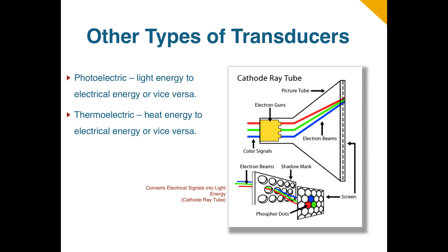Two other types of transducers include photoelectric and thermoelectric. Photoelectric transducers convert light energy to electrical energy, or the other way around. Thermoelectric transducers convert heat energy to electrical energy, or vice versa. Types of photoelectric transducers include the cathode ray tube, shown here, light bulbs, laser diodes, and light-emitting diodes. Thermoelectric transducers include the thermocouple and thermistor. The thermocouple converts heat energy to electrical energy, while the thermistor is a component that experiences changes in resistance with changes in temperature. In other words, as the temperature of the thermistor increases, so does its resistance.